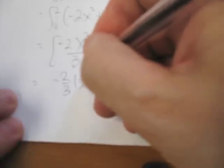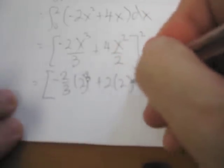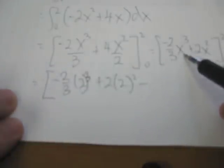Now, we're applying the fundamental theorem of calculus. This means that I'm going to have negative 2 thirds by 2 cubed plus 2 by 2 squared, and of course, when I put 0 in here for x, I get 0, so I'm just subtracting 0.